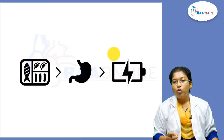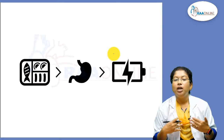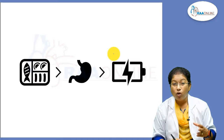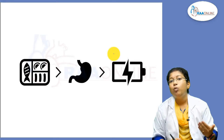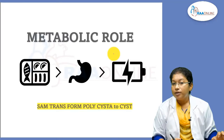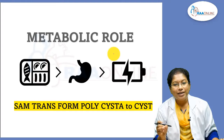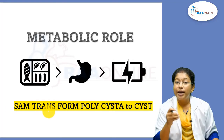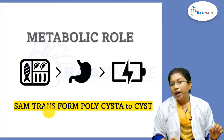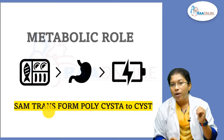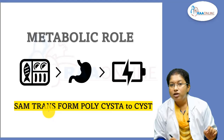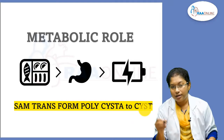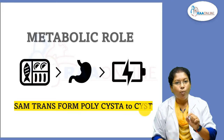Next is the metabolic role. What are the biologically important compounds synthesized from methionine? I have given a mnemonic to remember them: 'SAM transform polycysta to cyst.' SAM means S-adenosyl methionine. Trans means it helps in transmethylation reactions. Form means it can produce N-formyl methionine. Poly means it helps in synthesis of polyamines. Cysta means during metabolism it can produce cystathionine and cysteine.